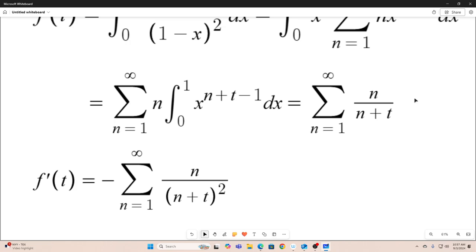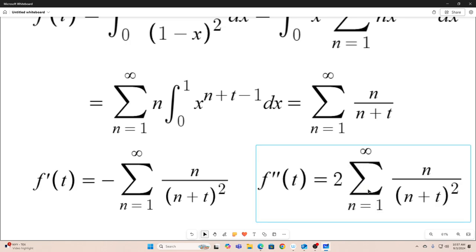So f prime of t is just the derivative with respect to t term by term of this sum right here. And that's equal to this. And then we'll go one more time, differentiate with respect to t to get f double prime of t. And that's equal to this. So again, we just differentiate this term by term.